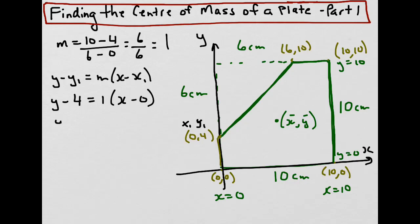Distributing the 1 across the brackets, we get y minus 4 equals x. 1 times 0 is 0, so we'll leave that out. Then we isolate the y by itself, move the 4 to the other side, so it becomes y = x plus 4. And that is the equation of that side of our shape, our plate.